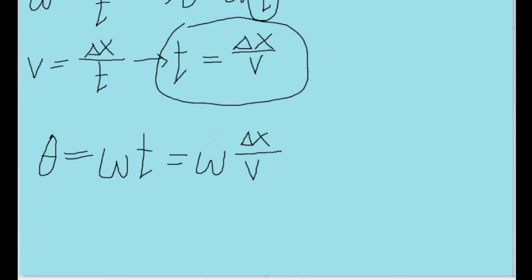Or in other words, it's equal to the angular speed of the ball, times the distance that it travels, divided by the tangential, the linear speed of the ball's motion. So, this is the final formula that we'll want to use.